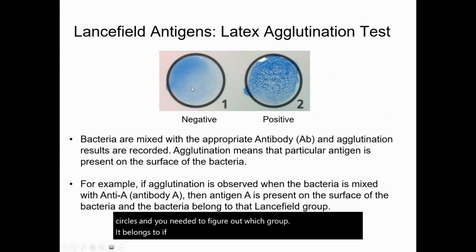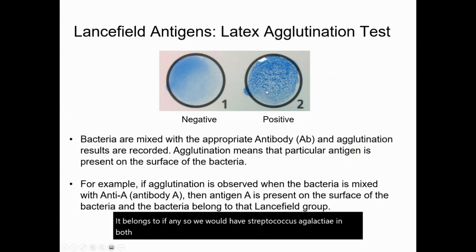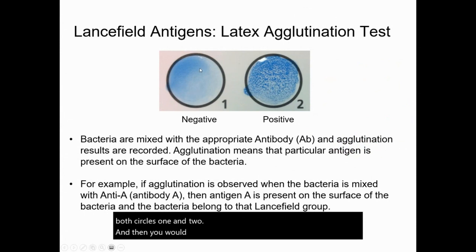We would have Streptococcus agalactiae in both circles one and two, then add antibody A to circle one and antibody B to circle two.